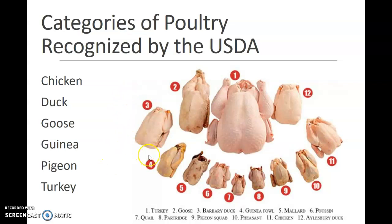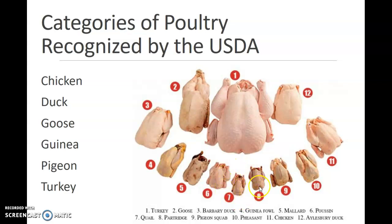I have provided this picture for you to show you the relationship of the different sizes of poultry items. This picture also includes game birds. The first and largest is the turkey, followed by number two the goose, number three duck, guinea fowl, here is a mallard duck, a poussin, the quail which is the smallest, a partridge, a squab, a pheasant. Number eleven here is a chicken, and number twelve is a larger duck.